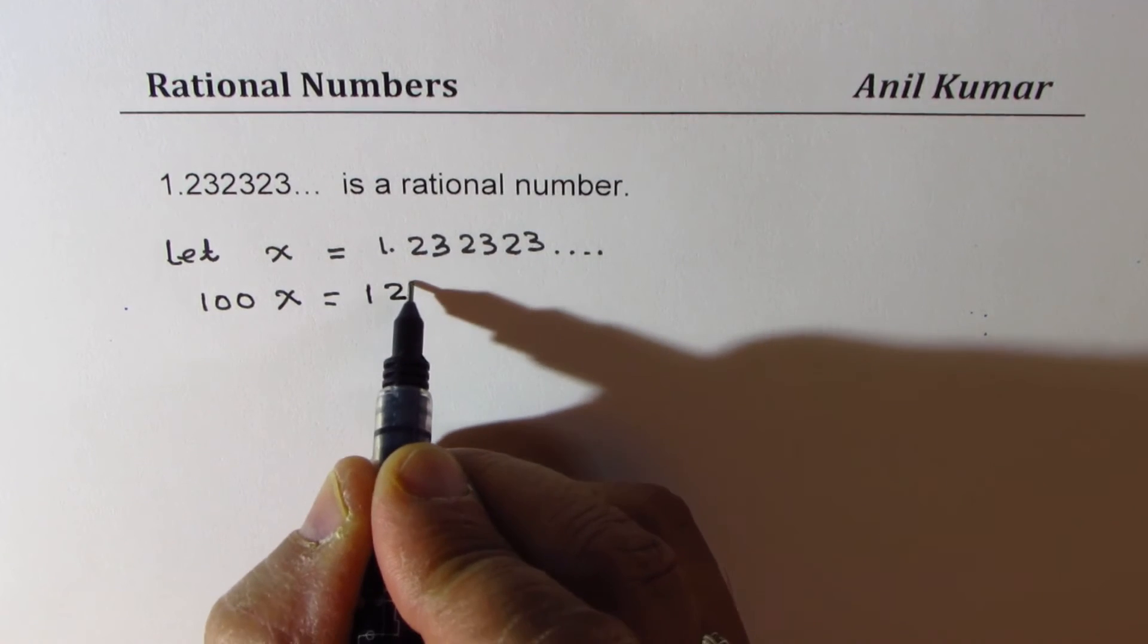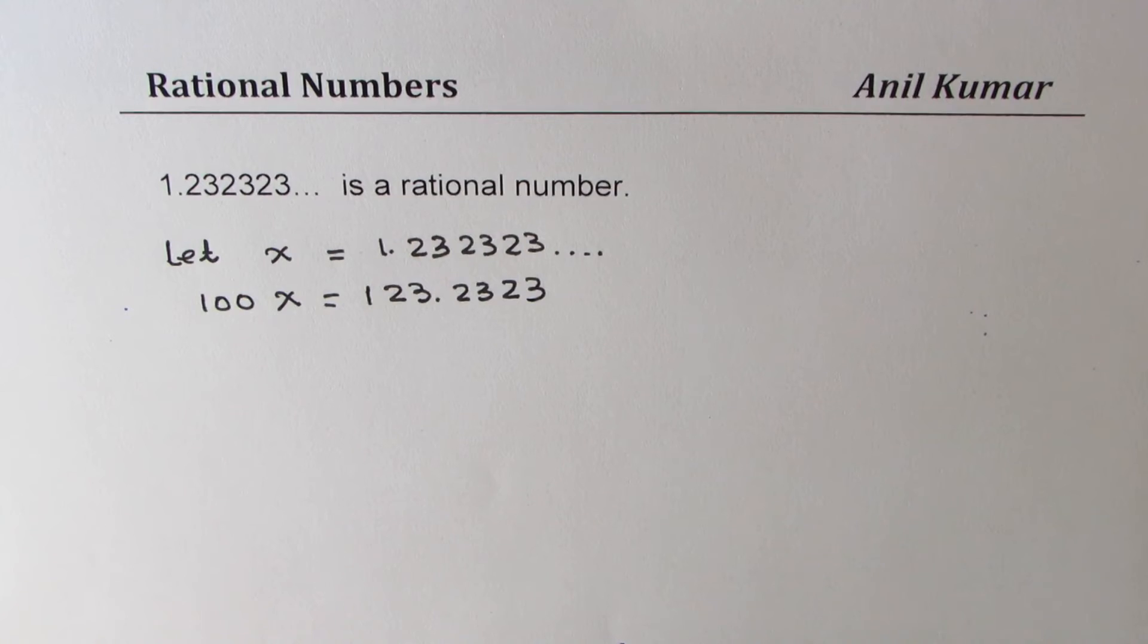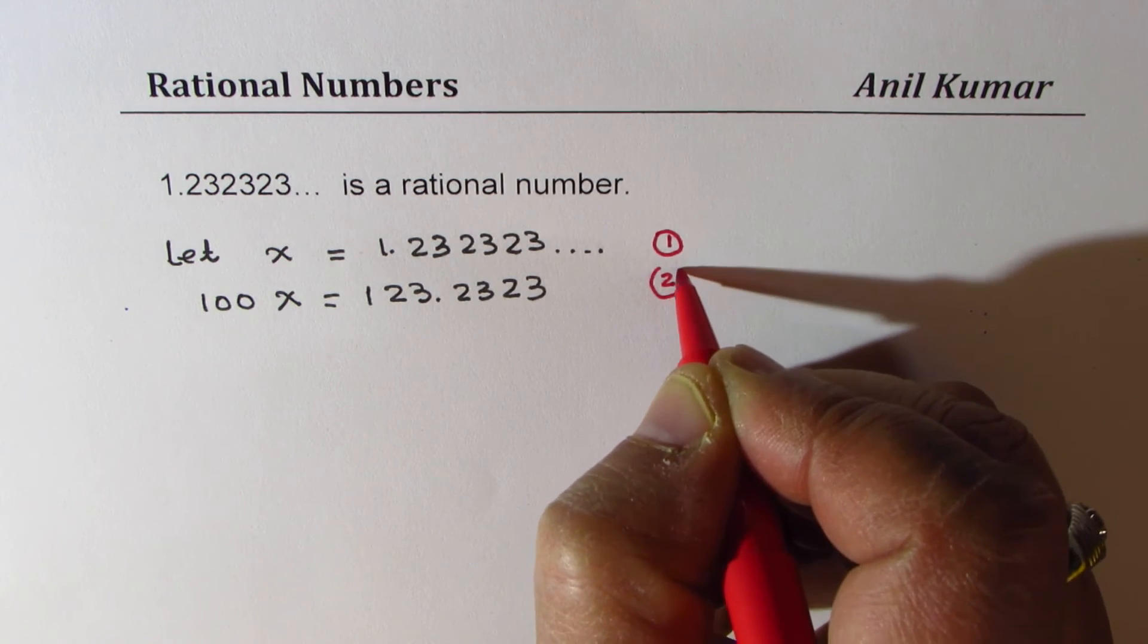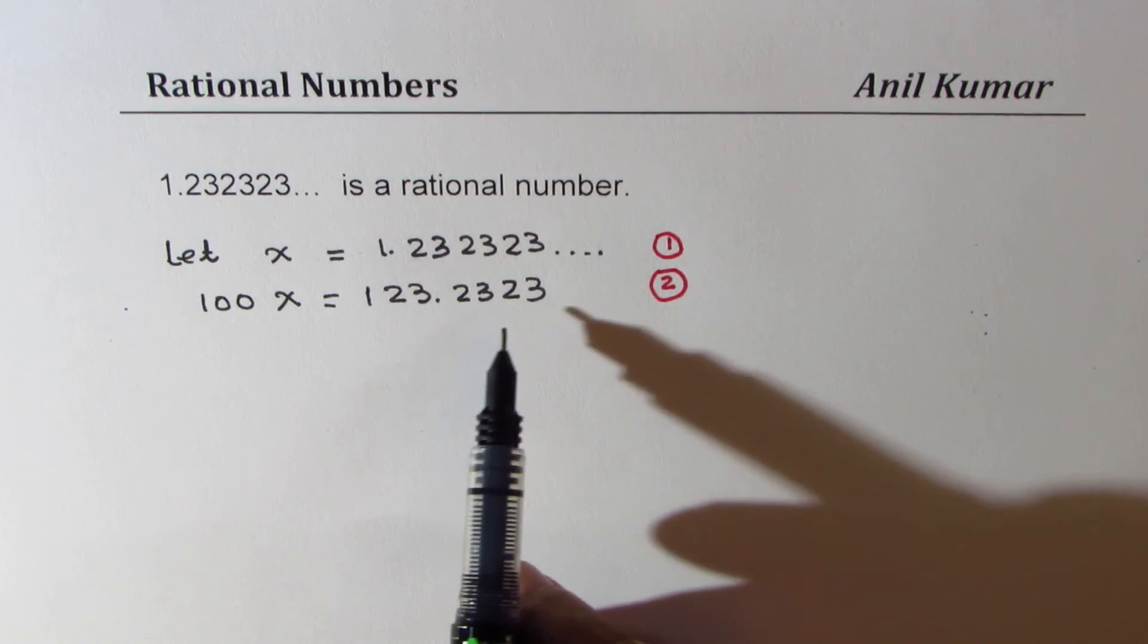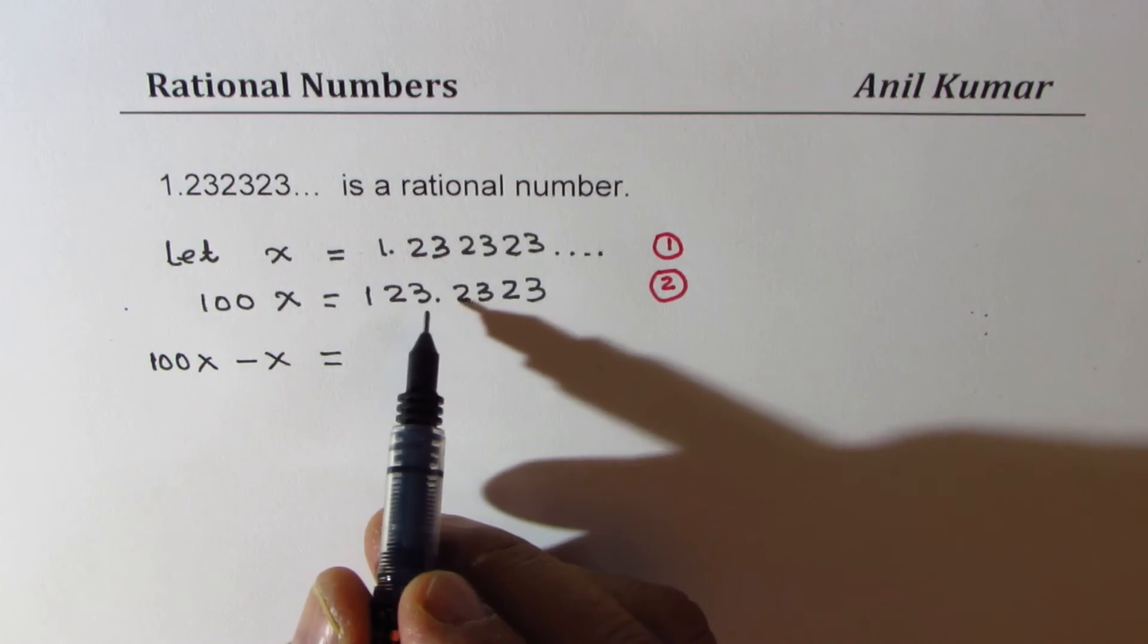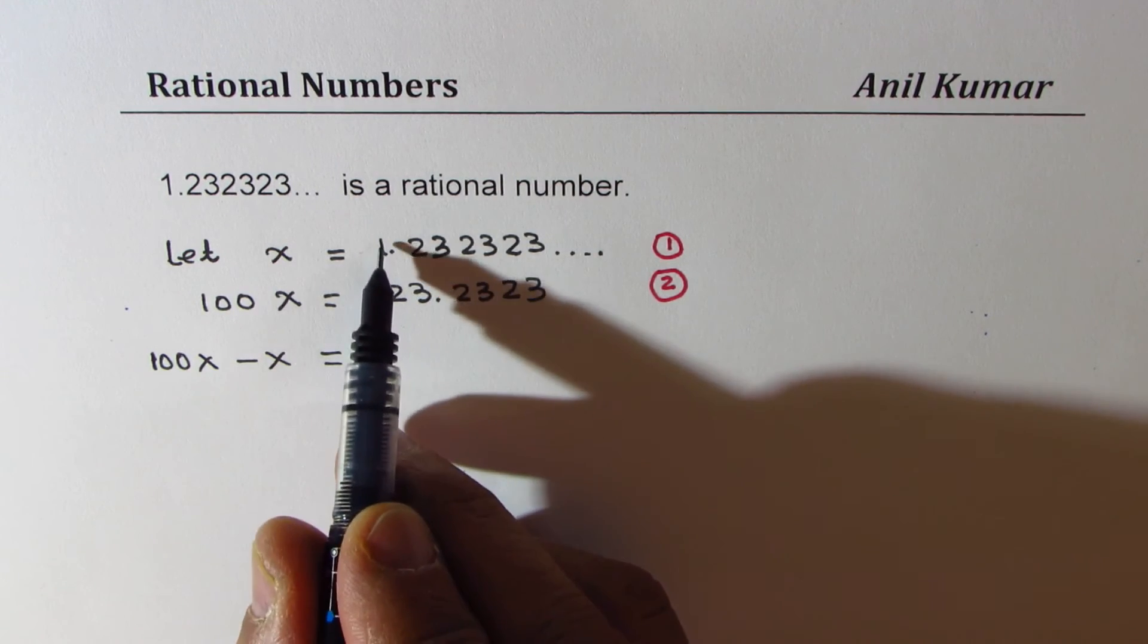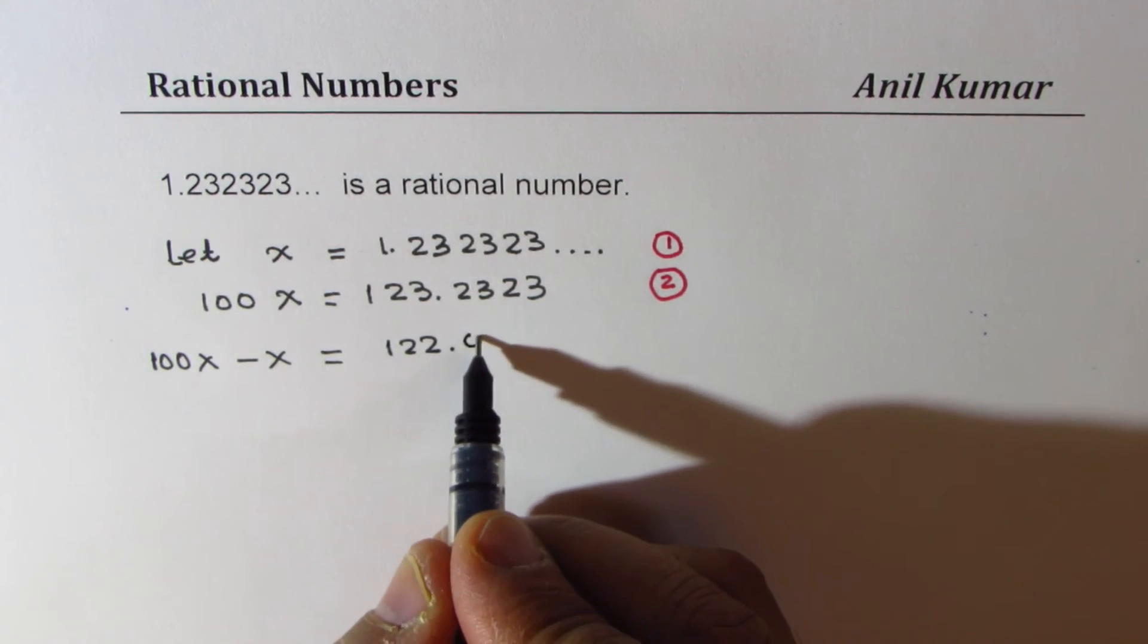So we get x equals to something, which is our statement number 1, and then we have another equation, which is 100x equals to 123.2323. See what happens when I do 100x minus x. Now, in that case, 123 minus 1 is 122. And after the decimal, we just get 00. Do you see that? All these numbers cancel.